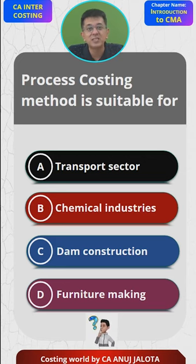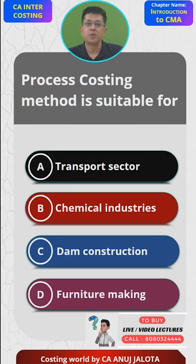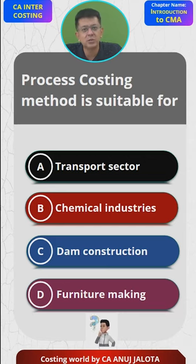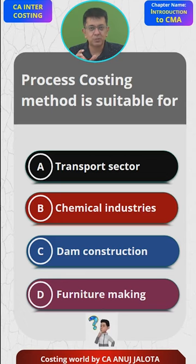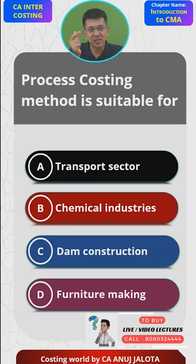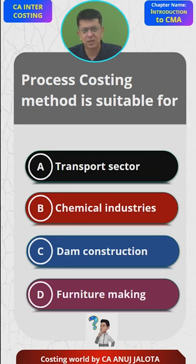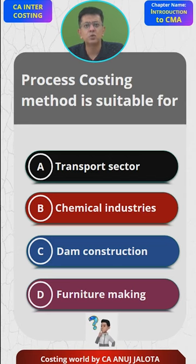Process costing applies where there are a series of processes before the product becomes a finished product. For chemical industries, for example, you make something by mixing two chemicals, then it goes to the next process where something else is mixed, and so on. Once options C and D are ruled out, option B — chemical sector — is in manufacturing and automatically fits. So the answer is B.